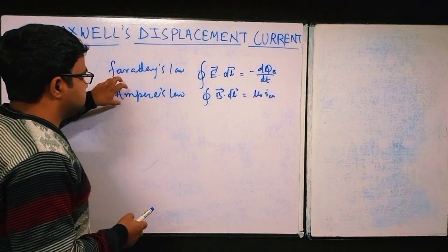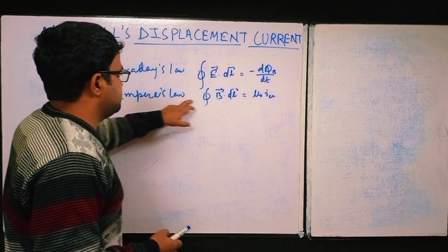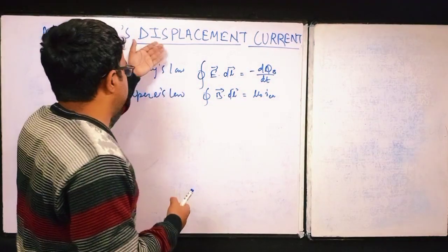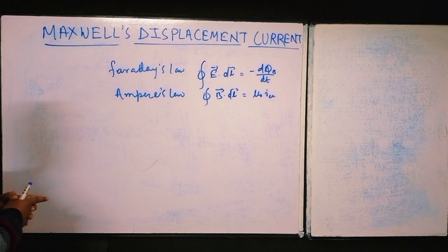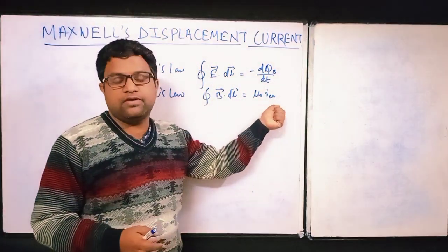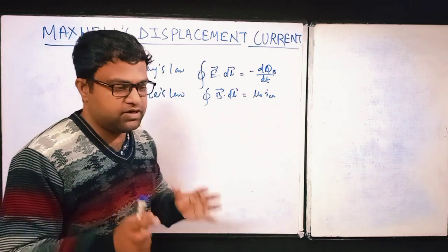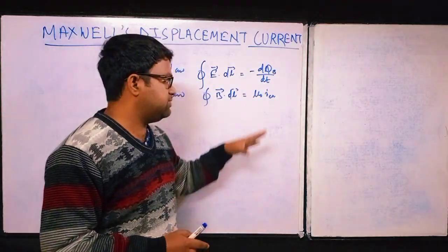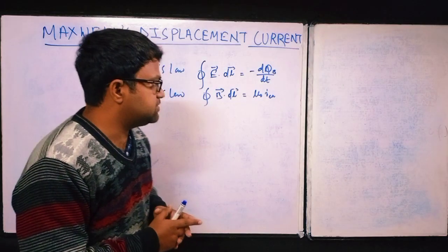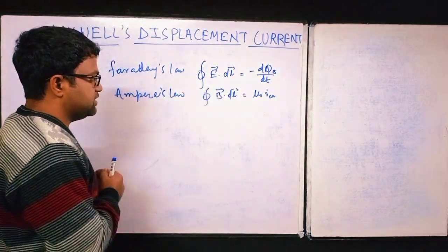From the idea of Ampere's law, we will modify it and see what Maxwell has done, and we will get the idea of displacement current. Basically there is no actual physical displacement here, but the name is displacement current.